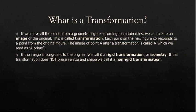The image of point A after a transformation is called A', written with an apostrophe next to the A. B would turn into B', etc. If the image is congruent to the original, we call it a rigid transformation or isometry. If the transformation does not preserve the size or shape, we call it a non-rigid transformation.